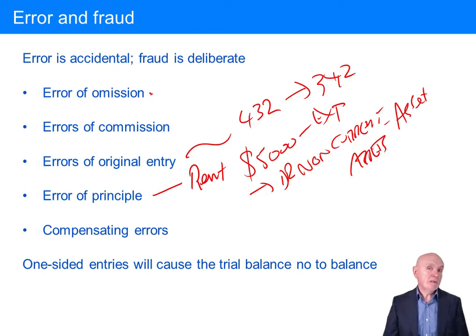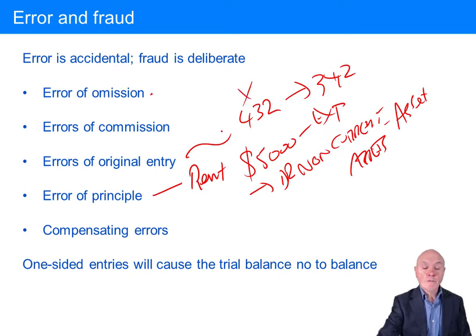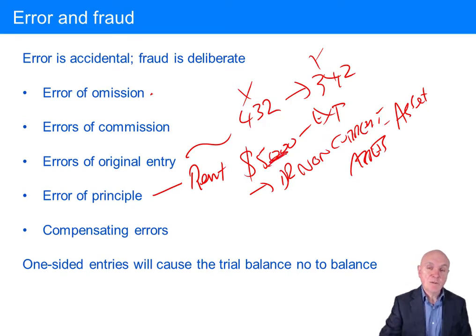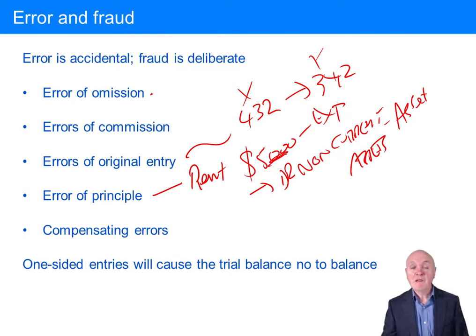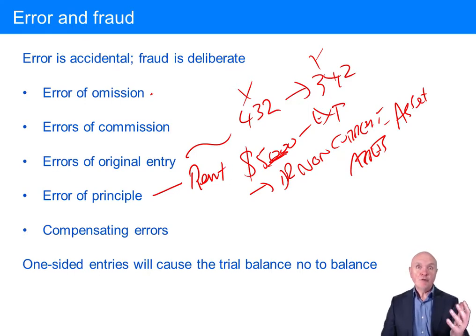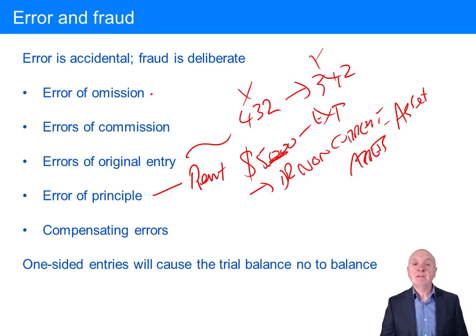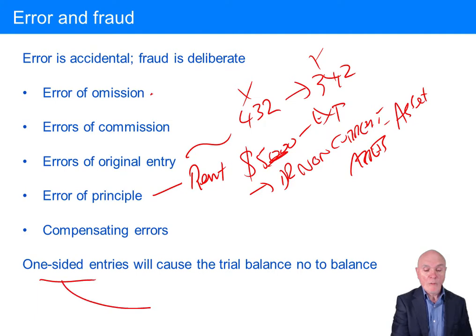Errors of original entry tend not to cause the trial balance to be out of balance — it doesn't matter whether we debit and credit 432 or 342, it's going to balance. Errors of principle: the figures aren't wrong, it's just where you put them to, so that's not normally shown up by a trial balance. And obviously compensating errors won't be either. Trial balances only pick up one-sided entries.